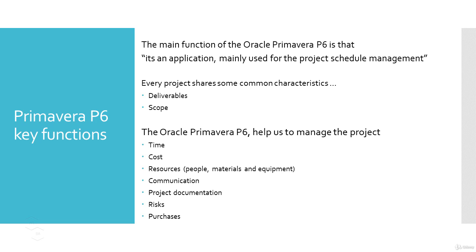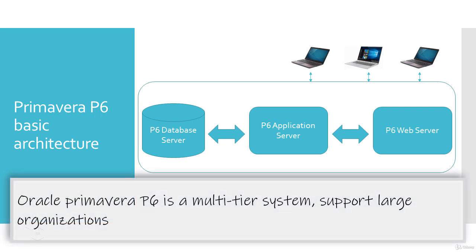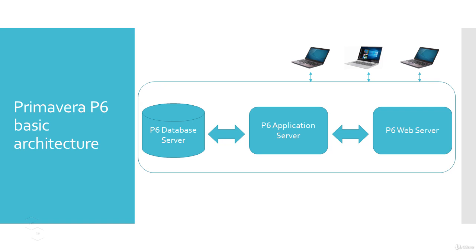Now let's quickly understand the basic architecture of Oracle Primavera P6. Primavera P6 is designed to support lots of users in a large organization — it's a true multi-tier system. In a multi-user environment with a large organization where you have thousands of users, projects, and hundreds of thousands of project activities to handle every day, Oracle Primavera P6 Enterprise Project Portfolio Management system is the solution. We have a database on the backend where all our data are stored, such as enterprise data and project data.